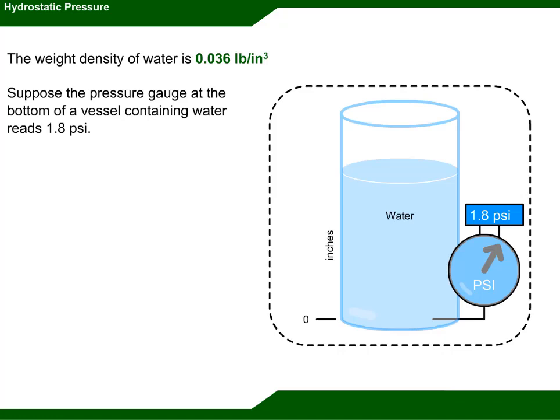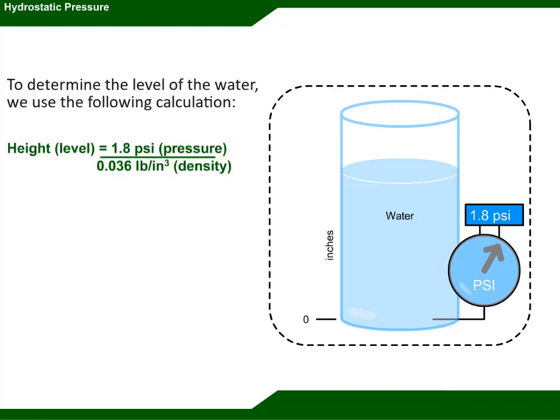Suppose the pressure gauge at the bottom of a vessel containing water reads 1.8 psi. To determine the level of the water, we use the following calculation: the height level equals 1.8 psi divided by 0.036 pounds per cubic inch.